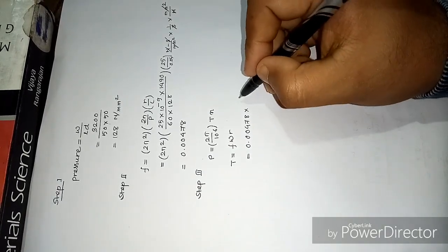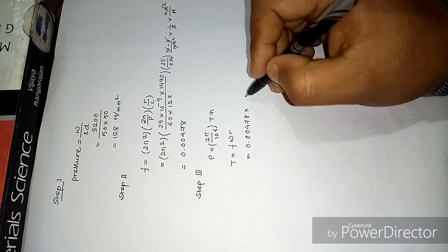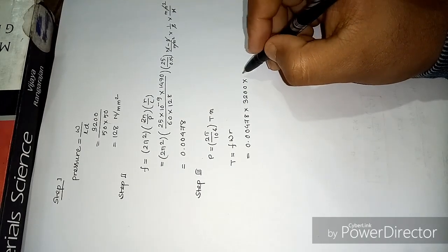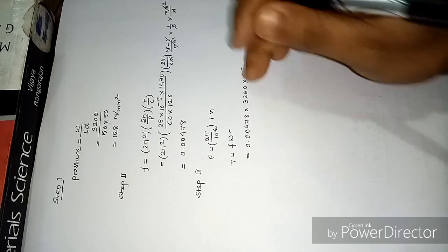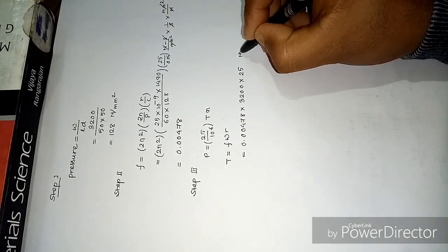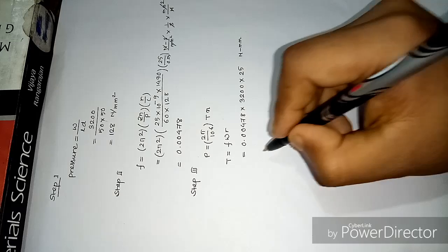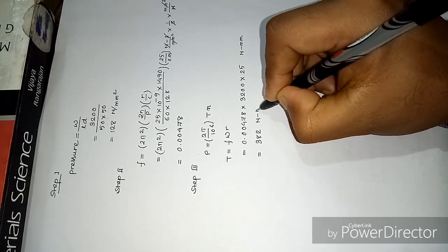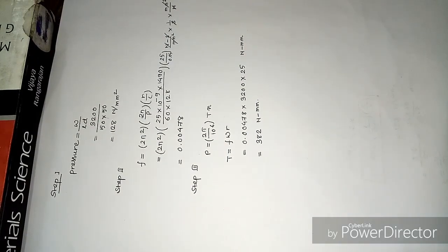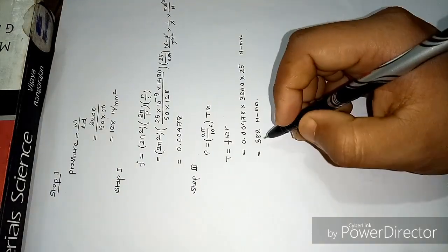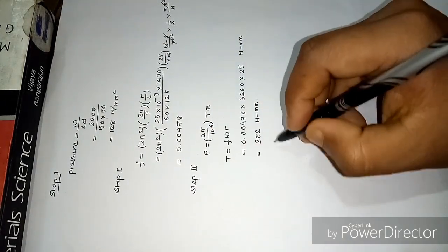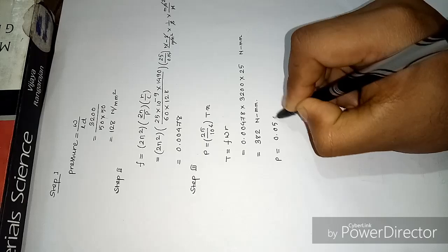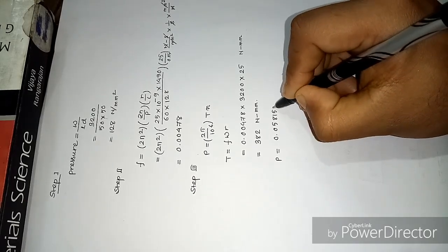We have weight 3200 and radius 25. This is unitless, Newton mm. We'll have 382 Newton mm. Now let's calculate power loss. Put this value, we will get the answer 0.058150.